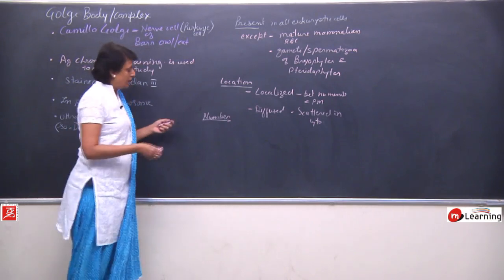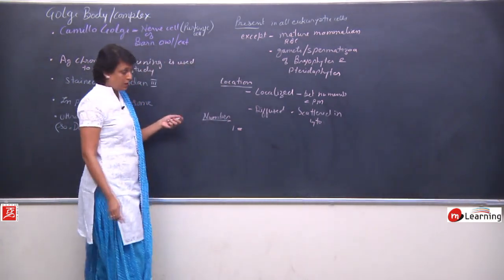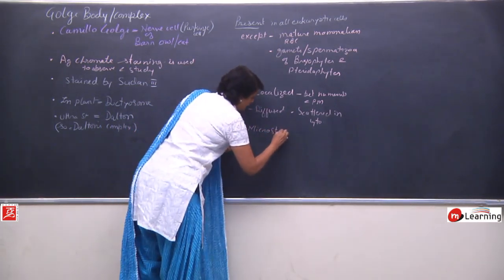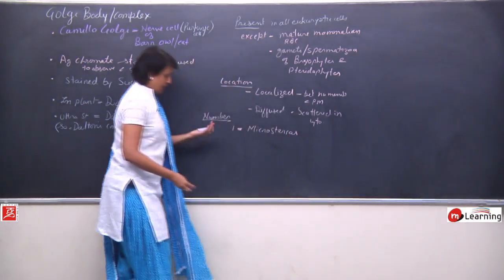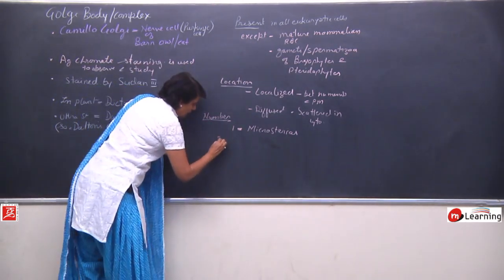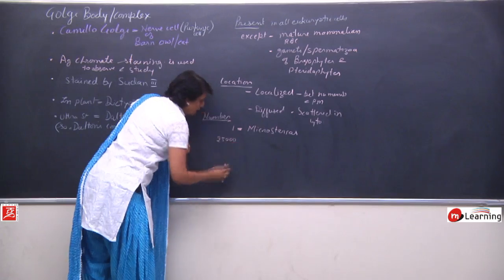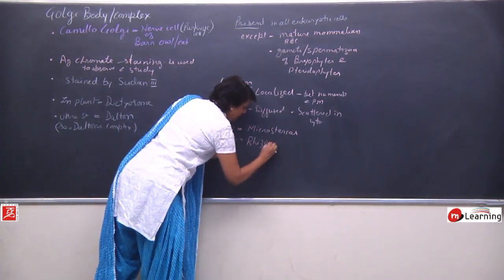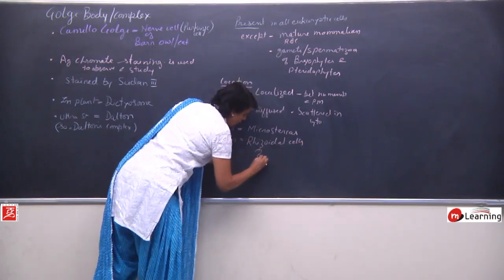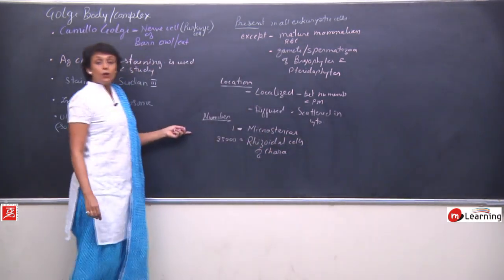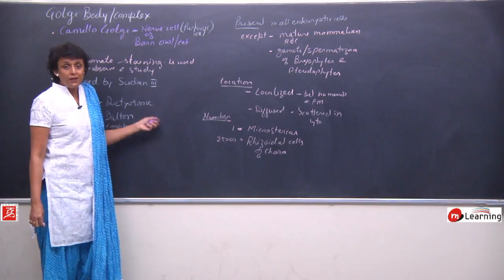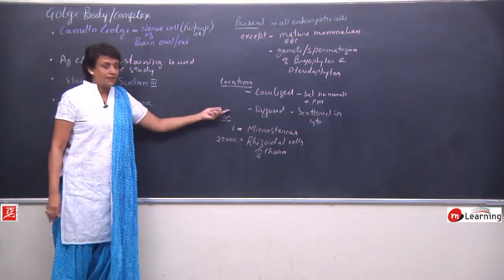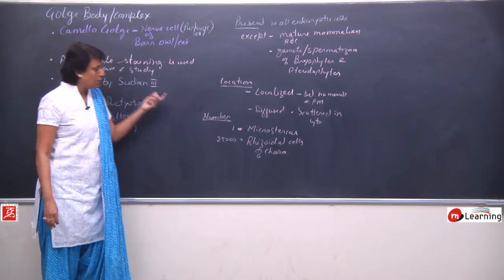The number is variable — one Golgi body in most animal cells. In certain organisms like Microsterias it has only one, while 25,000 Golgi bodies have been reported in rhizoidal cells. Normally, the number remains one in animal cells and about 6 to 8 in plant cells, but extreme numbers are also seen.